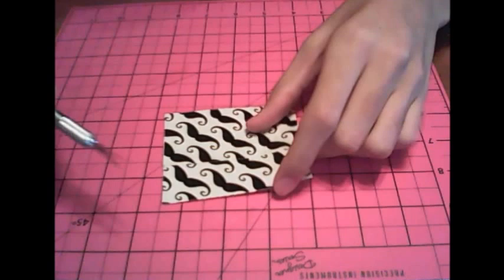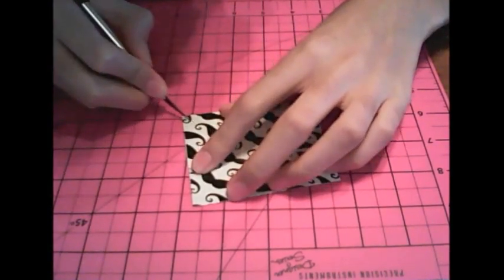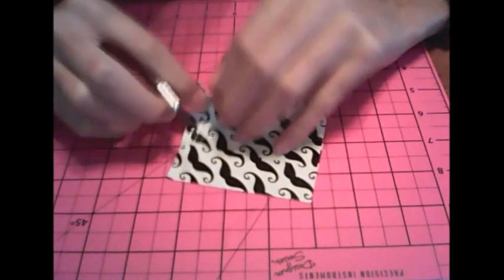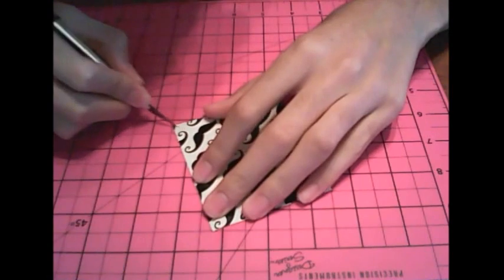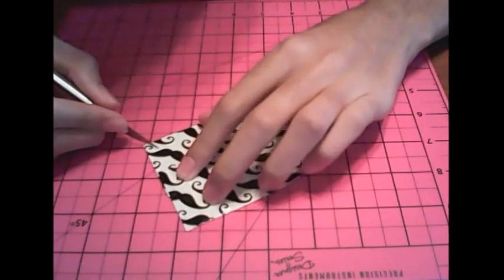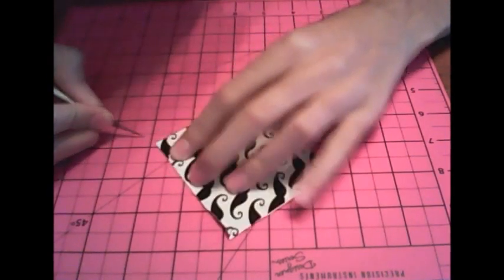Now you're going to take your exact knife, or scissors, whatever you prefer, and cut this little slit right here, just like that, on all four corners, just like this.